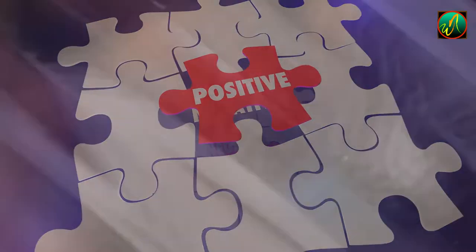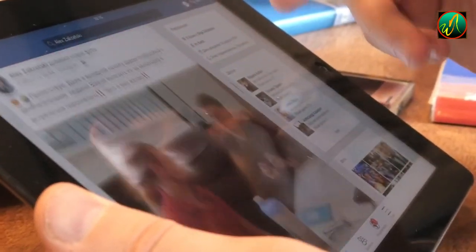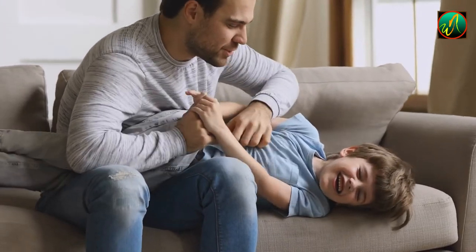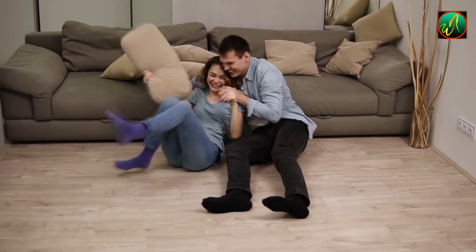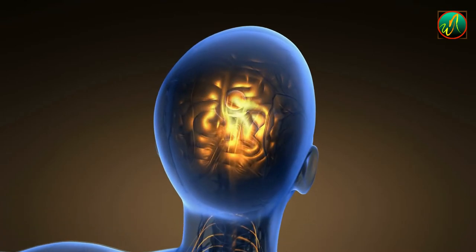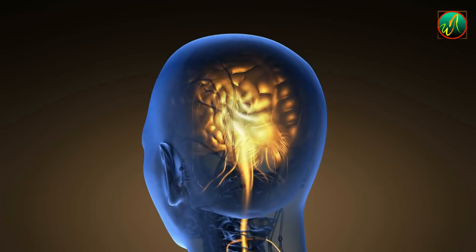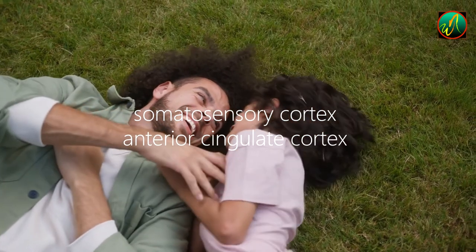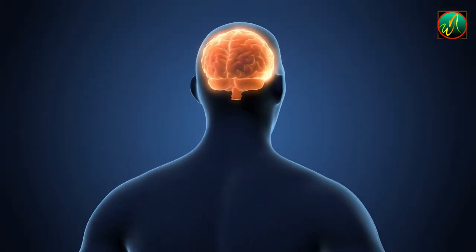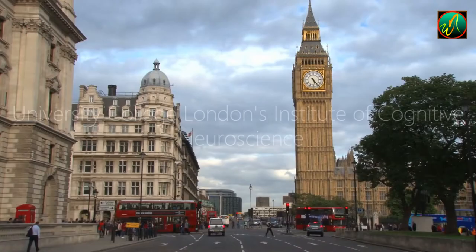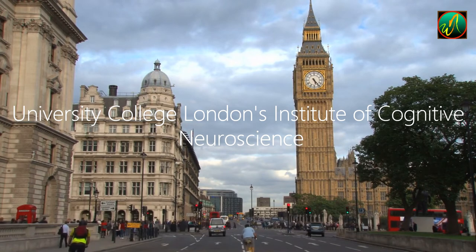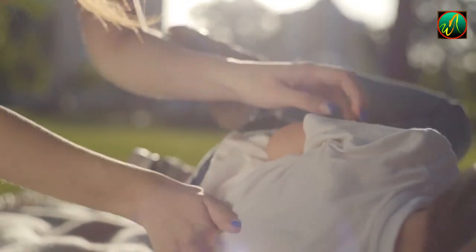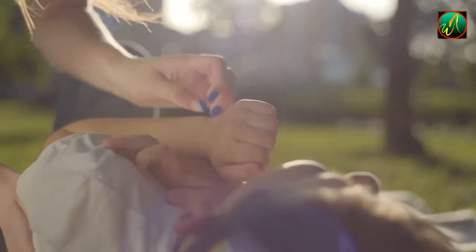You cannot tickle yourself. The last bizarre fact about our bodies is that we cannot tickle ourselves. When you try to tickle yourself, your cerebellum, the area in the back of your brain that monitors movement, predicts the feeling you will feel, counteracting the response that the tickle might otherwise evoke in other parts of your brain. The somatosensory cortex and the anterior cingulate cortex are two separate areas of your brain that are responsible for giving you that ticklish sensation. According to a study conducted at University College London's Institute of Cognitive Neuroscience, both of these regions are less active when you tickle yourself than when you tickle someone else, which helps to explain why tickling oneself doesn't feel tickly or nice.